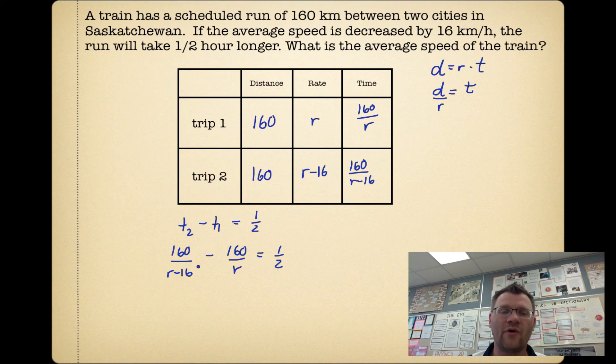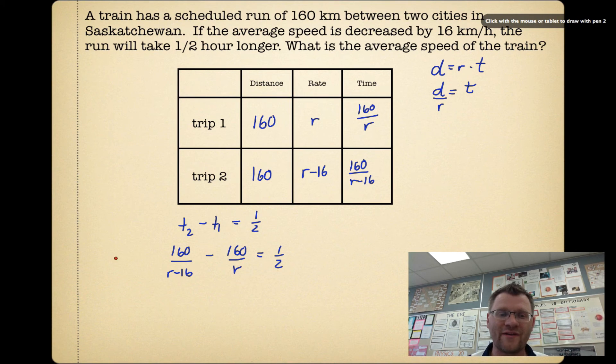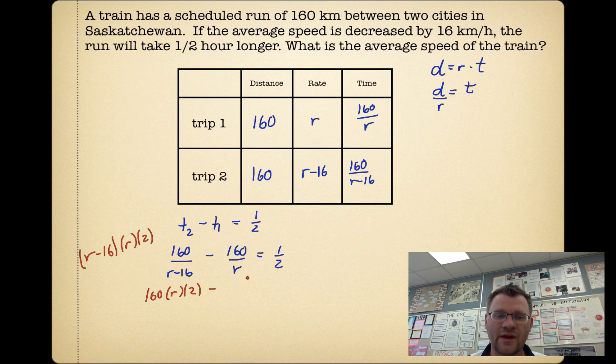So once again, we're going to multiply by all the denominators in order to cancel them out. So that means we have to multiply by r-16, r, and 2. When I multiply by r-16, r, and 2, the r-16 cancels out here. I get 160·r·2. For the second fraction, the r cancels out, so I still have 160·2·(r-16). And for the last fraction, the 1/2, the 2 will cancel out, and I'm going to be left with r·(r-16).